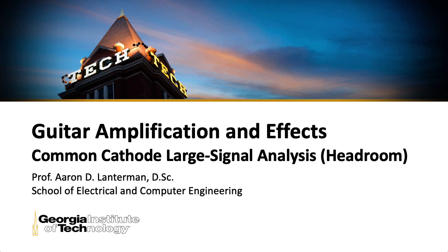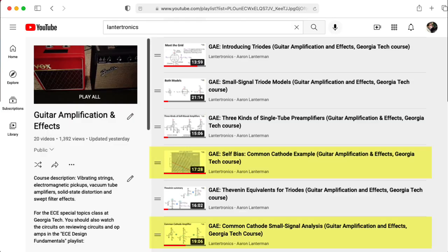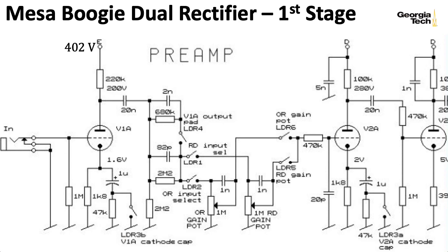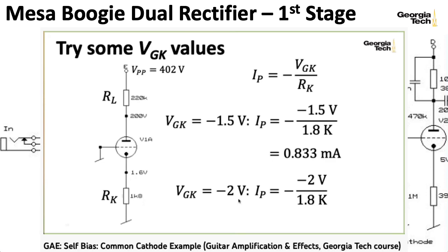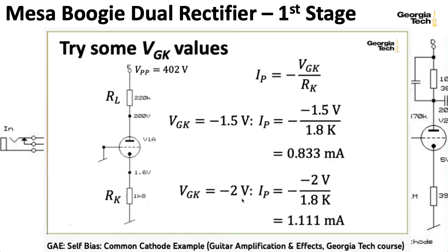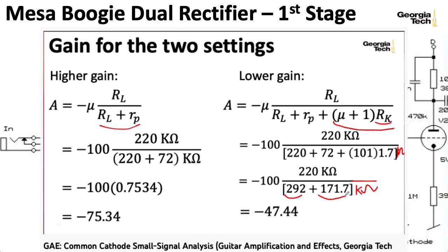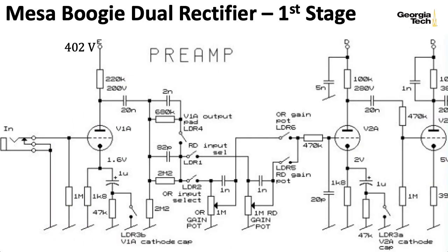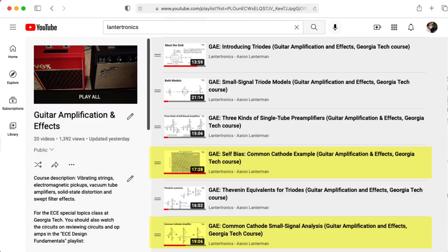Hi there, my name is Aaron Lanterman. I'm a professor of electrical and computer engineering at Georgia Tech, and in previous lectures on guitar amplification and effects, we've been looking at the first preamp stage of the Mesa Boogie dual rectifier. We've computed the DC bias points for this first stage and also calculated small signal parameters. This lecture assumes you've seen those lectures, though you can probably pick up some things along the way if you haven't. I would recommend going back and checking them out.